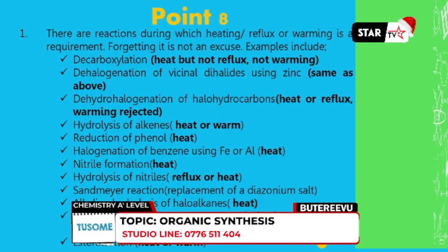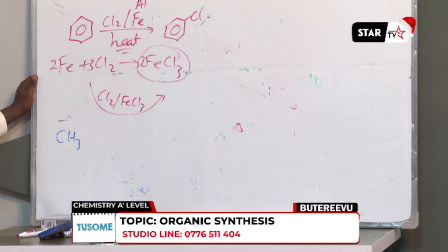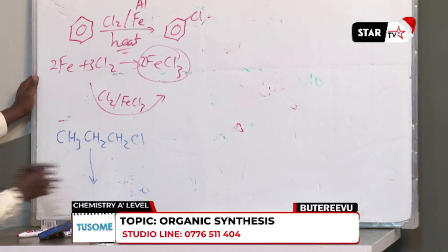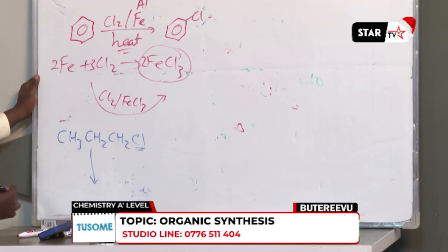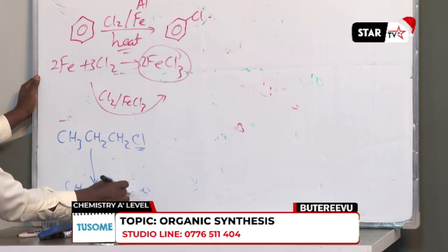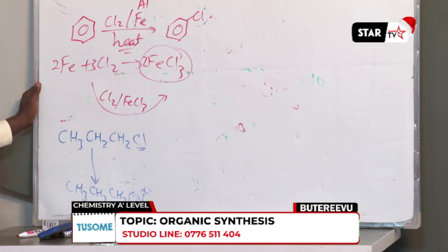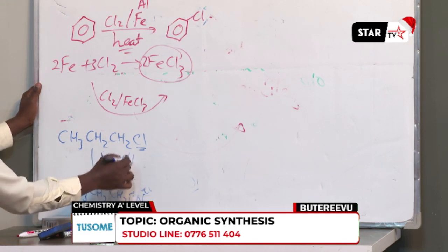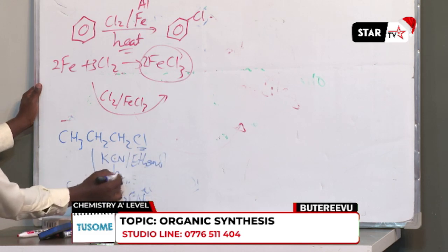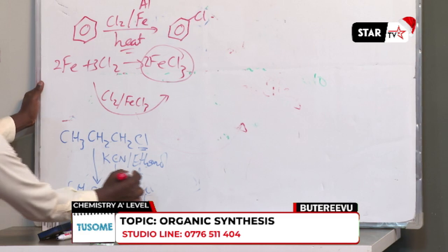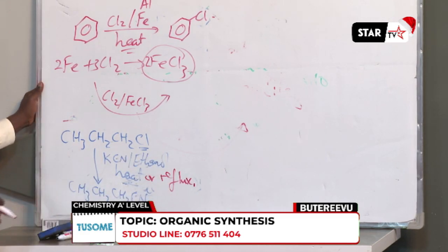The next reaction is nitrile formation. If we are forming nitriles — also sometimes called cyanides — we form them from alkyl halides. For example, to convert chloropropane to propanenitrile, you use potassium cyanide in the presence of ethanol, or alcoholic potassium cyanide, and you must heat. Heating or reflux is accepted, but warming is strictly rejected.